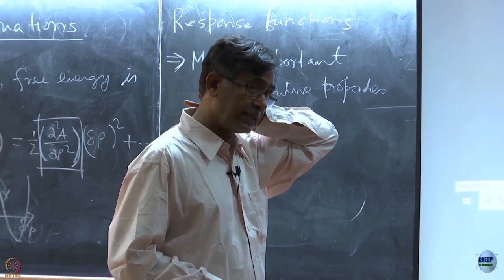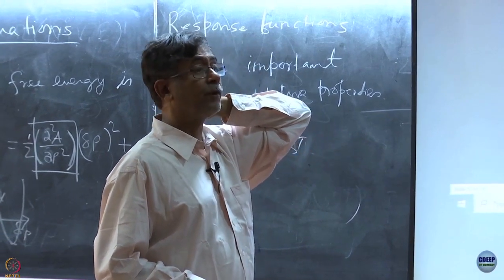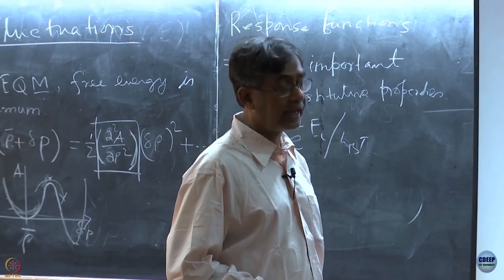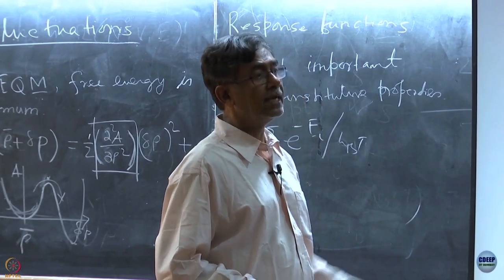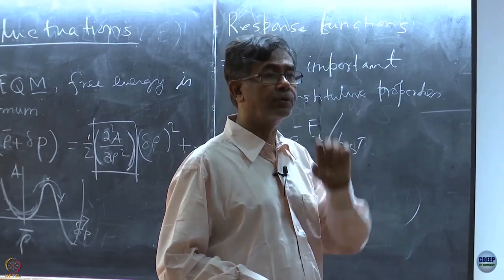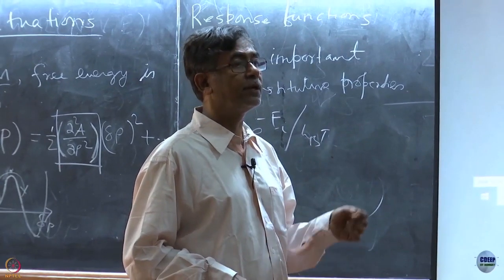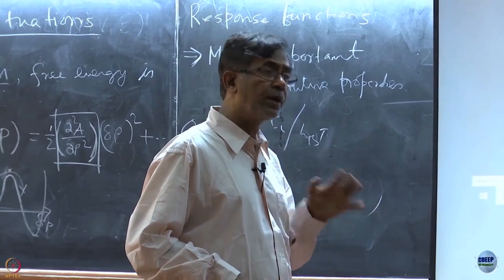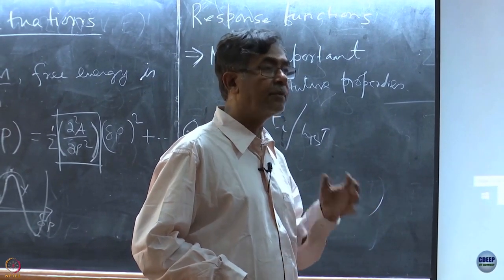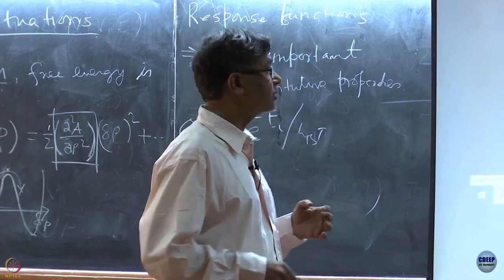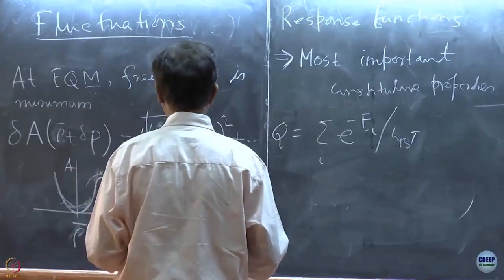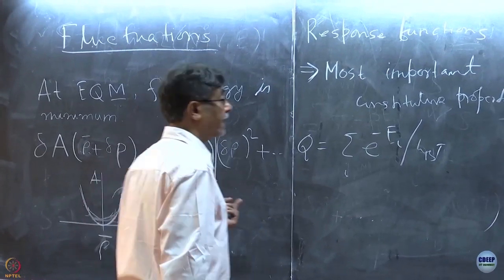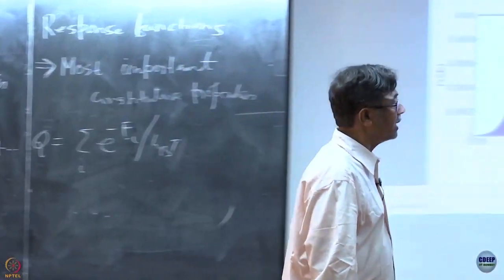Central limit theorem says that if your total observable, let's say X capital, is a sum of a large number of small parts, and if there is weak correlation between them, then the sum is Gaussian. This is called central limit theorem, which is an exceedingly important part of statistical mechanics.